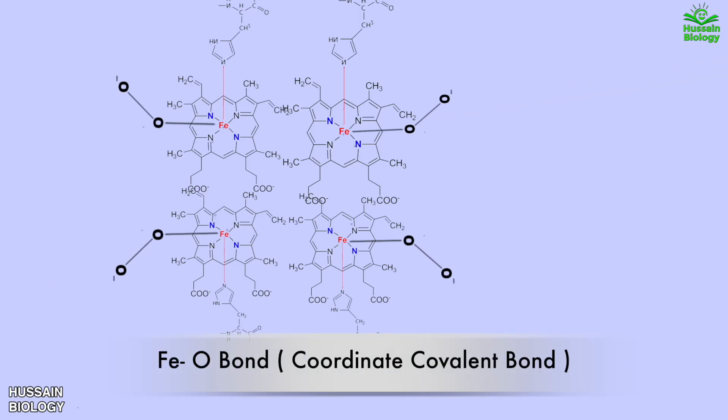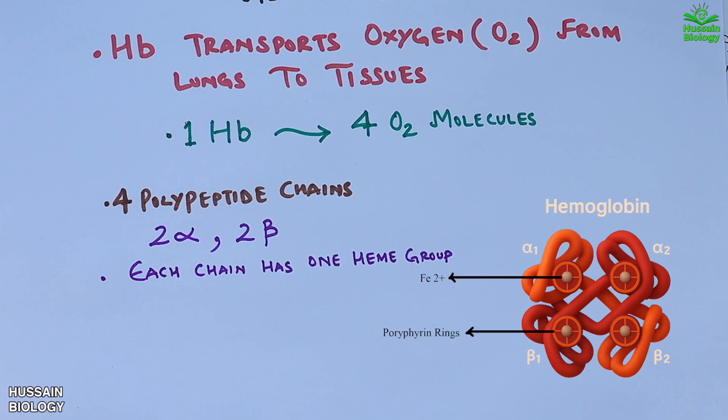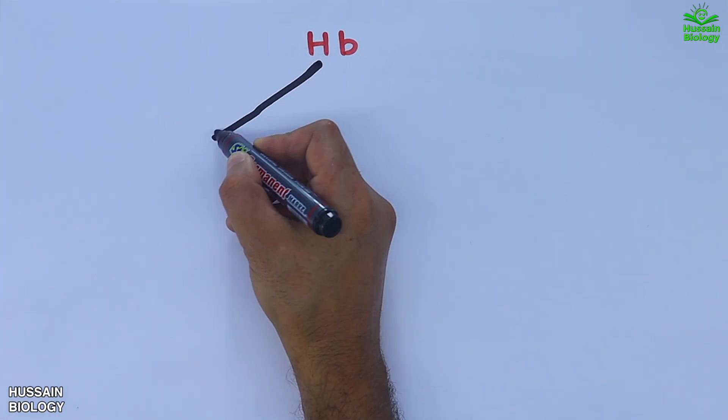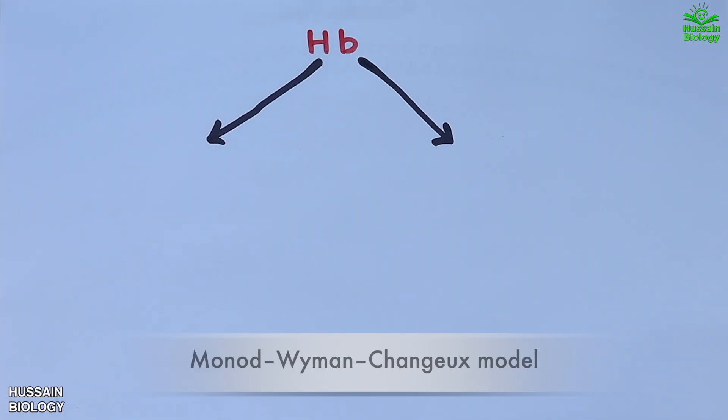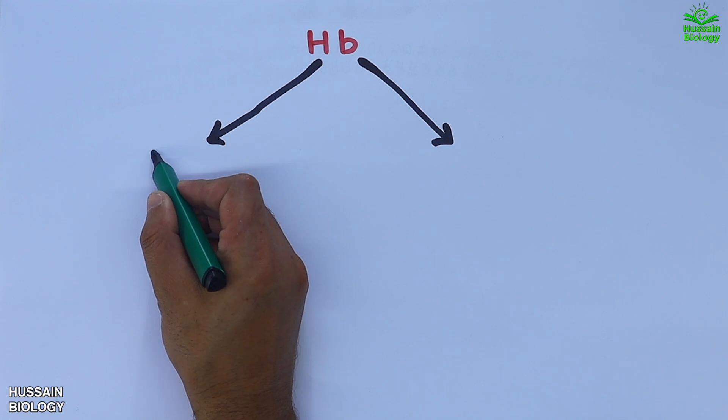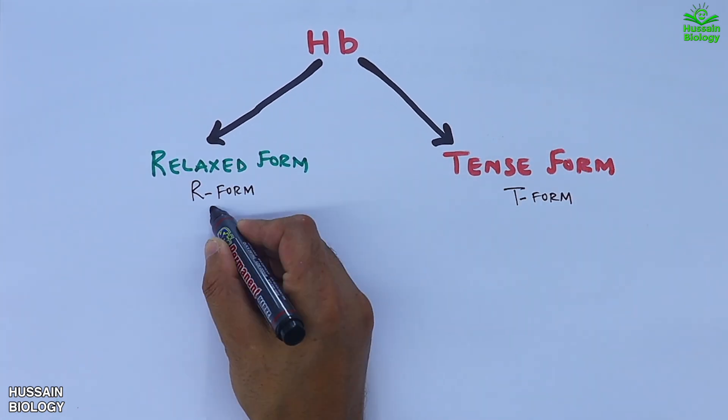The O2 binds Fe ions via coordinate covalent bond. Before we get to the transport process, it must be noted that hemoglobin exists in two forms. The Monod-Wyman-Changeux model describes hemoglobin as existing in two conformations: the relaxed form and tense form.